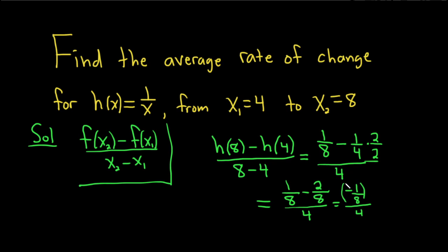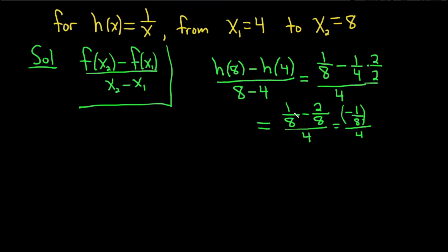Okay, so we have negative 1 over 8 divided by 4. So when you divide, you multiply by the reciprocal. So this is negative 1 over 8 times the reciprocal of 4. But 4 is really 4 over 1, so it's times 1 over 4. So this is equal to negative 1 over 32. And so that would be the average rate of change.